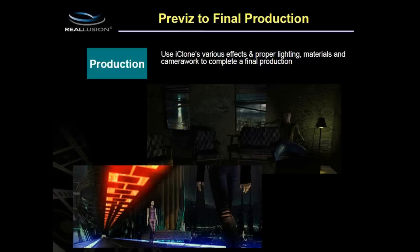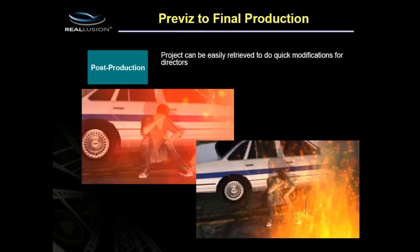In post-production, say the director wants a bird's eye shot of an explosion instead of the original camera angle. Without pre-vis, you'd have to re-film the whole thing, taking a lot of resources and time. But with iClone, it's simply clicking and dragging your camera to a different position to get a totally different angle and creative expression.